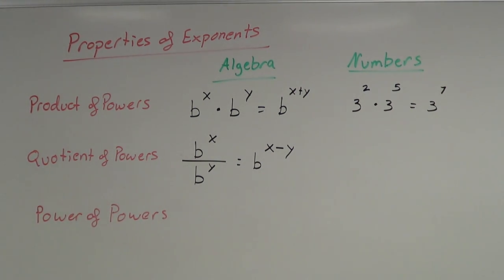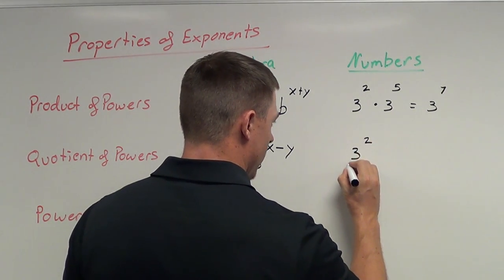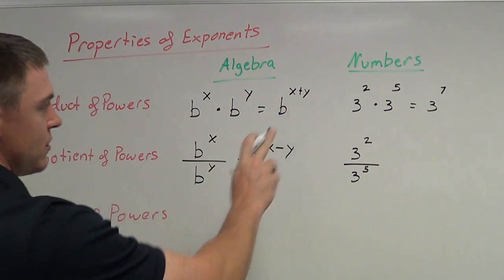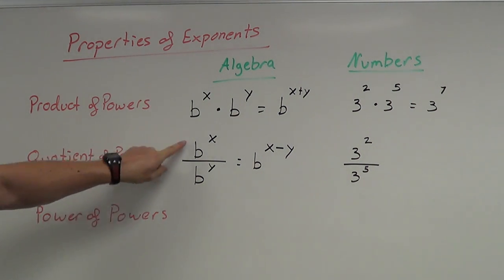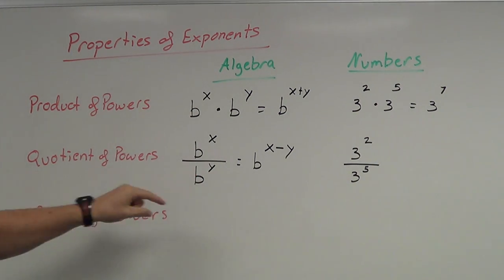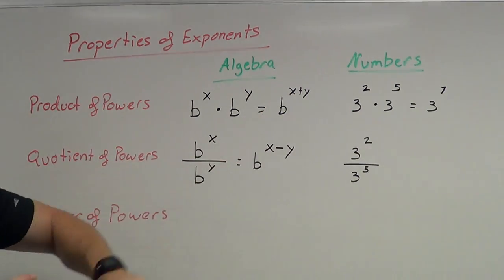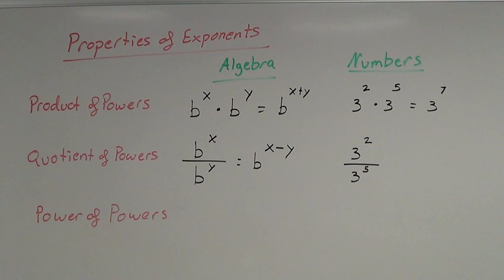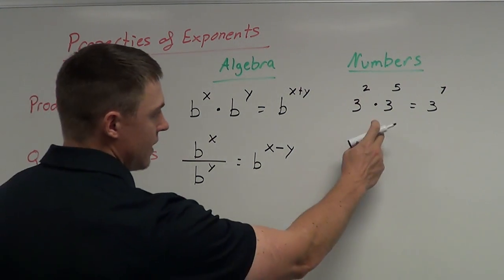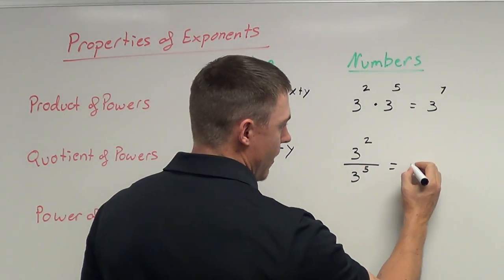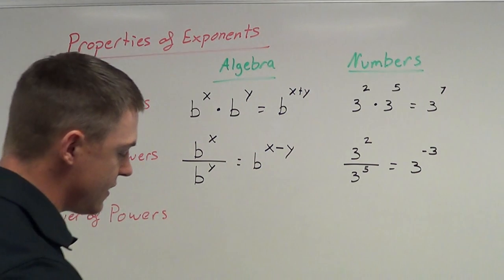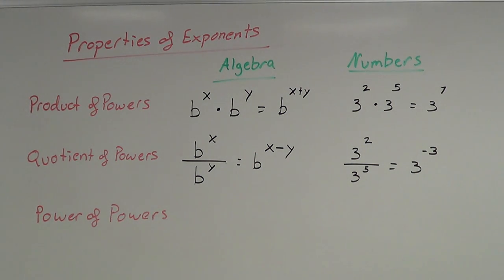Using the same numbers: if I have 3 to the second power divided by 3 to the fifth power, I have like bases and I'm dividing, so I subtract the exponents — 2 minus 5 — giving me 3 to the negative third power. In a later video I'll explain more about negative exponents, but that's where the negative 3 comes from.